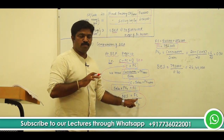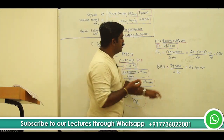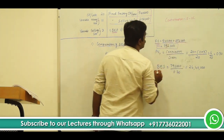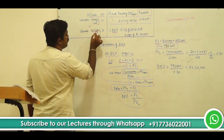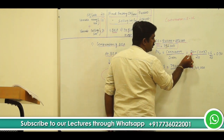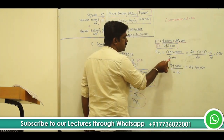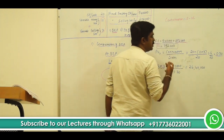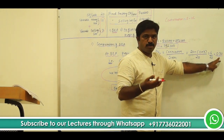Now we have to find out PV ratio. PV ratio is contribution divided by sales. Contribution means sales minus variable cost. Selling price per unit is 20. Variable cost is variable manufacturing cost plus variable selling cost: 11 plus 3 equals 14. So, contribution per unit is 20 minus 14 equals 6. PV ratio is 6 divided by 20, which gives 30%, or expressed as a ratio, 0.30.